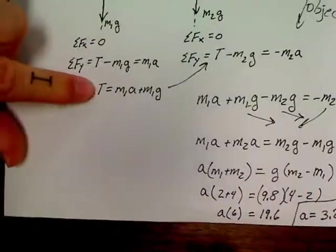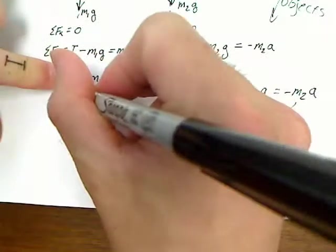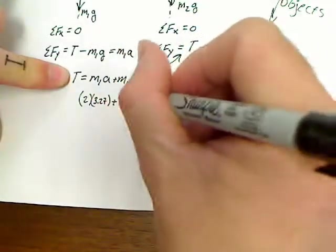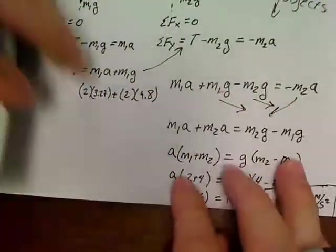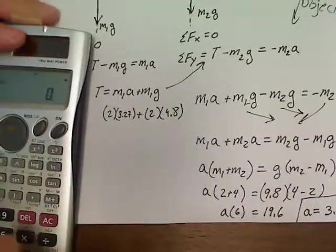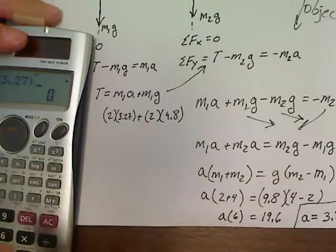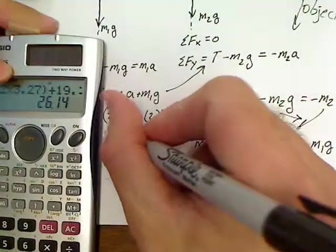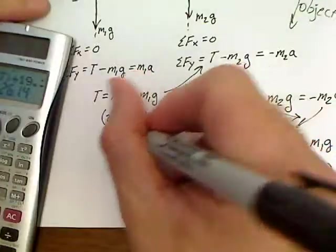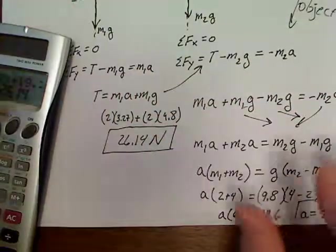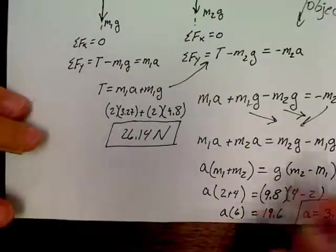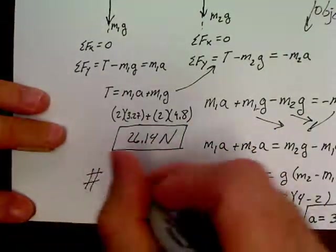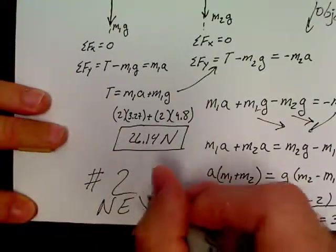We'll go back to here. So here we can go back and say 2 times 3.27 plus 2 times 9.8. So we've got 2 times 3.27 plus 2 times 9.8 is 19.6. And we've got 26.14 Newtons as our tension in this problem. I'm going to pause this one here because of the YouTube time limit, and I'm going to say now let's go to video number 2 next.